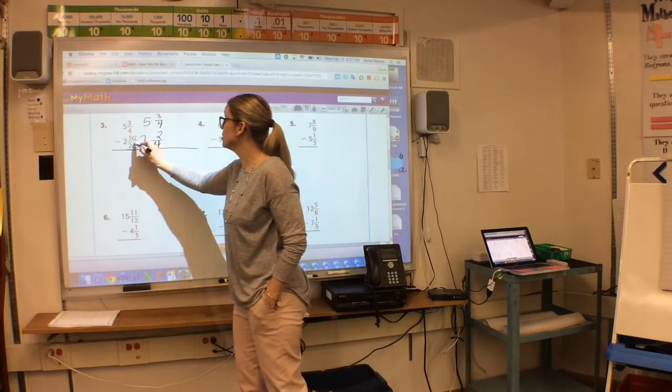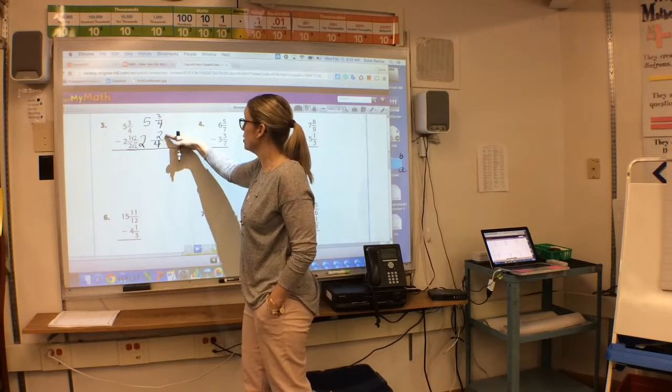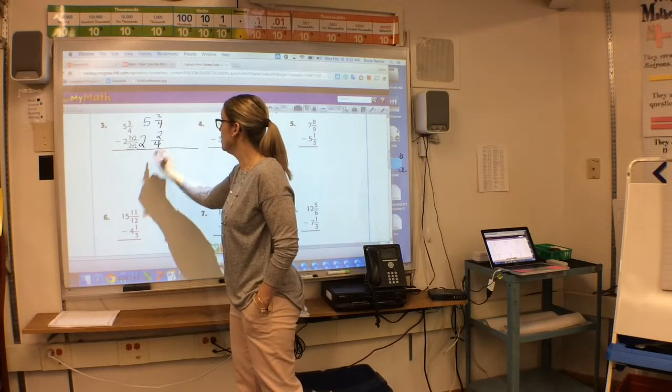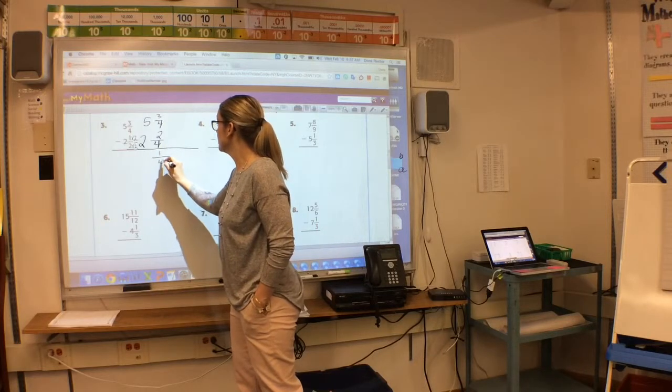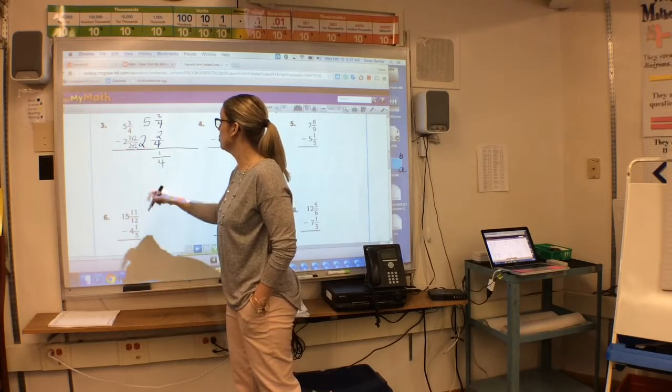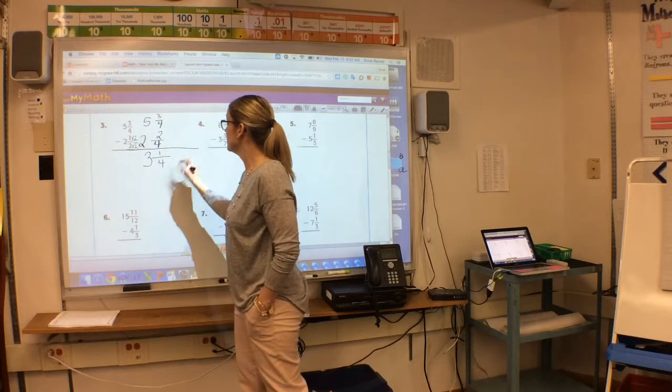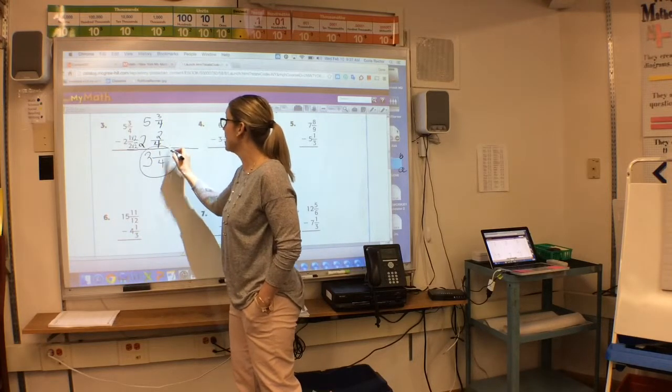Now I'm ready to subtract. 3 take away 2 is 1. Our denominator stays the same. 5 take away 2 is 3. This is in simplest form. I'm done.